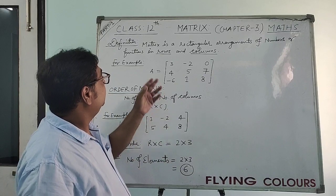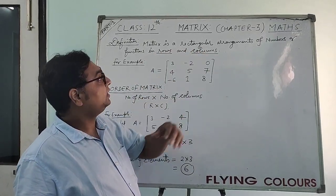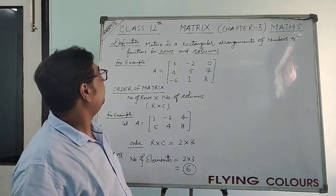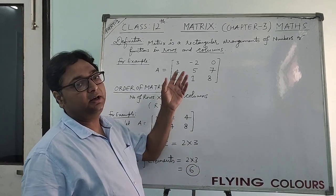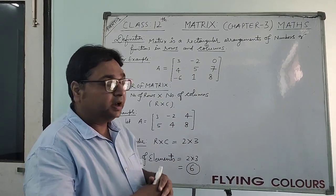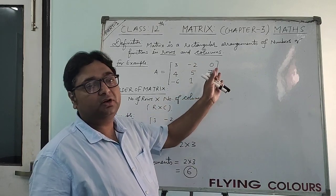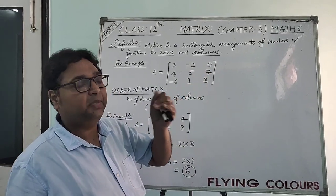What is matrix? Matrix is a rectangular arrangement of numbers or functions in rows and columns. Whenever we are entering our data in terms of rows and columns, that is called matrix.